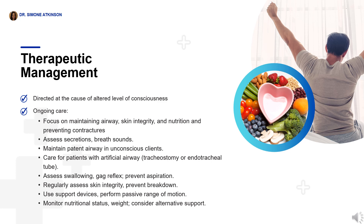In addressing altered levels of consciousness, our focus is on identifying and managing the underlying cause. We prioritize maintaining the airway, skin integrity, and nutrition while preventing contractures. We assess the ability to clear secretions, monitor breath sounds, and maintain a patent airway for unconscious patients. Proper positioning is essential for those with artificial airways such as a tracheostomy or endotracheal tube. We assess swallowing and gag reflex while implementing measures to prevent aspiration, such as elevating the head of the bed, and any signs of possible aspiration should be reported promptly to the healthcare provider.